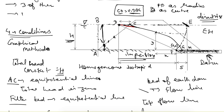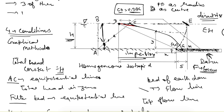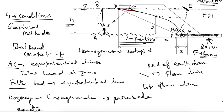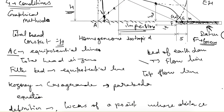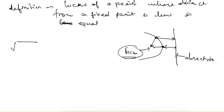Now we have both the directrix and the focus — the starting point of the filter F is the focus. The midpoint between them gives one point on the parabola, and other points can also be found. At some horizontal distance x and vertical distance y, a point on the parabola satisfies: √(x² + y²) = x + s, where x + s is the distance from the directrix and √(x² + y²) is the distance from the focus.